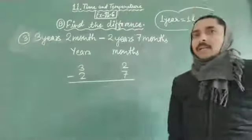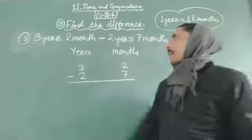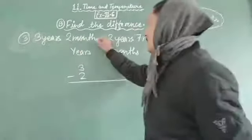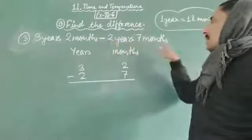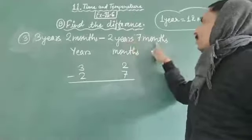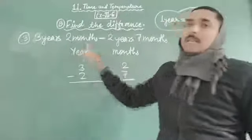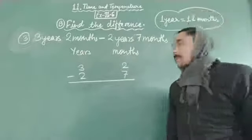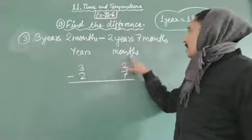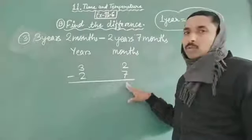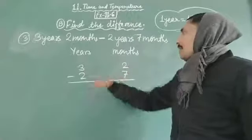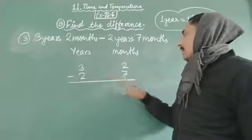Let's solve Question Number 3: 3 years 2 months minus 2 years 7 months। 2 years 7 months को 3 years 2 months से subtract करेंगे। Years के column में years की values और months के column में months की values लिखेंगे। 3 years 2 months minus 2 years 7 months।